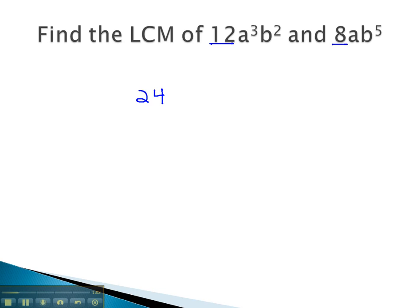Then, we need to use all the variables that appear: a's and b's. And we attach the highest exponent that appears on each. The highest exponent we see on an a is cubed. The highest exponent we see on a b is a fifth power. So that makes our least common multiple for these two monomials 24a³b⁵.